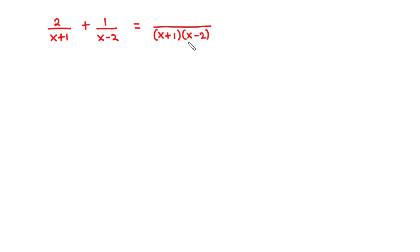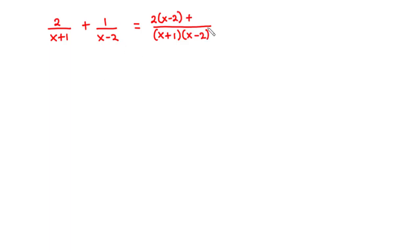We are going to divide x plus 1 times x minus 2 by each of the factors. So x plus 1 times x minus 2 divided by x plus 1 — x plus 1 cancels, leaving x minus 2. This becomes 2 times x minus 2. Then x minus 2 cancels x minus 2, leaving x plus 1. So that is 1 times x plus 1.